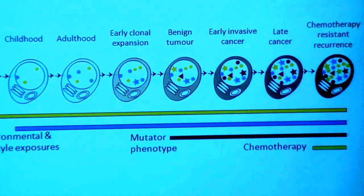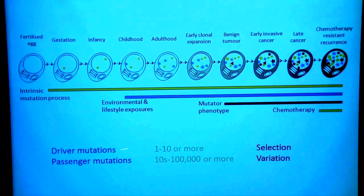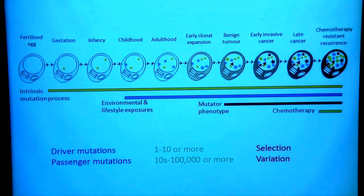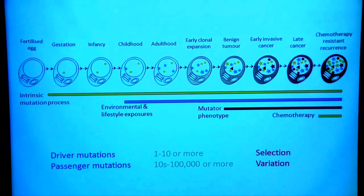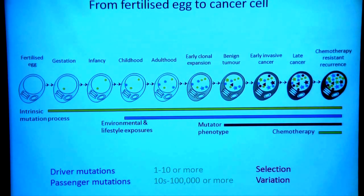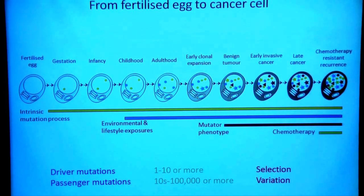So when we come to sequence this final cancer genome, what we're going to be finding is the driver mutations — one to ten or more — and they should give us some sort of idea about the selective forces that have been operative on the cancer cell to allow it to grow better than its normal neighbours. And we'll be finding tens to hundreds of thousands or more passengers, because the number of passenger mutations present in an individual cancer can be hugely variable. But those passenger mutations should give us some idea about the mutational processes that have been operating during the course of the patient's lifetime, because those mutational processes may have left their imprint in the types of mutations on that final catalogue.